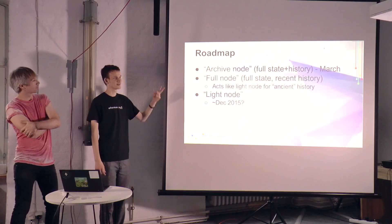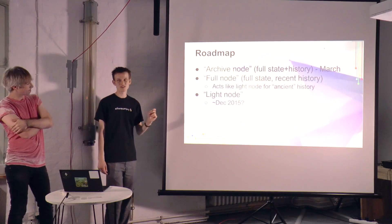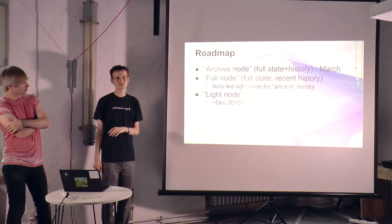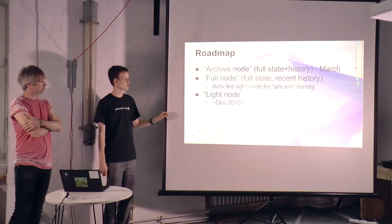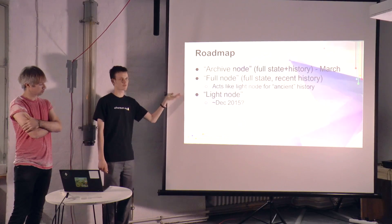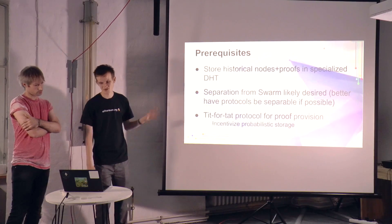The basic roadmap is that the client we're going to have for 1.0 is an archived node — the simplest thing to implement, it stores everything. Then after that, we want to move from archived node to what we're calling a full node. Full nodes store the entire state but only store recent history — you can imagine they store the state roots going back maybe a week, and then just some more block headers going back maybe a month or two, and transactions going back that far as well. If they want to grab ancient history, they would maintain some block headers and use the light node protocol to ask for ancient history. So full nodes are actually much closer to light nodes than they are to archived nodes. And then light nodes will just download block headers by default, and we expect it will take quite a while for the full sort of light client technology to get rolled out because it involves a whole bunch of various prerequisites.